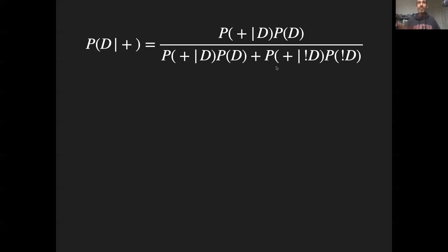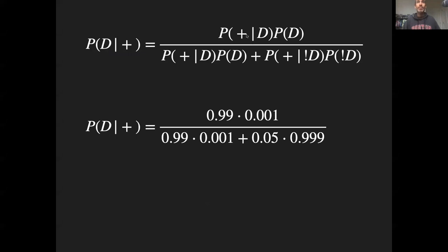In this case, we have discrete actual numbers that we can plug in for these probabilities. The probability that you're positive given that you have the disease, that's your 99% efficacy. The probability that you have disease, that's that one in a thousand, 0.001. That number goes down in here as well, and then for this other term we have the probability that you're positive given that you don't have the disease, that's our rate of false positives, that was 5%, 0.05, and the probability that you don't have a disease, that's just one minus the probability that you do, so that's 999 out of a thousand, 0.999.